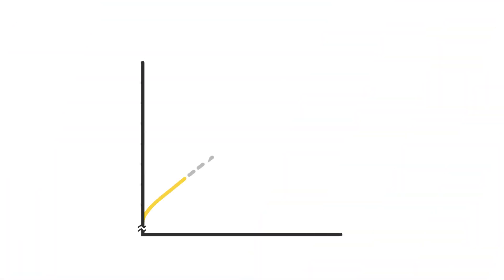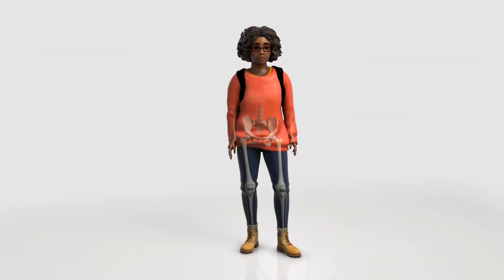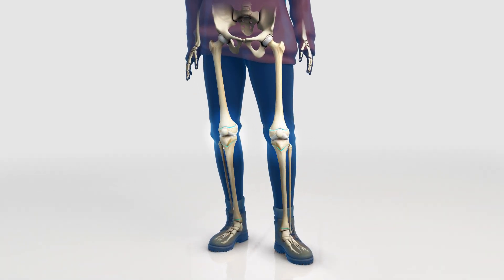Your doctor can determine how fast your bones are growing, or growth rate, by plotting your age and height on a growth chart. The steeper the line on the growth chart, the faster your growth rate. The growth plates in each one of your long bones have different growth rates too. For example, the growth plates around your knees have higher growth rates than other parts of the leg.